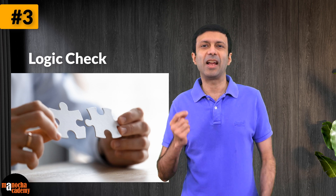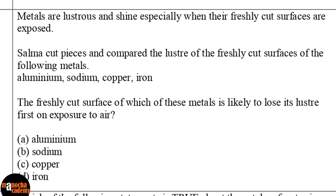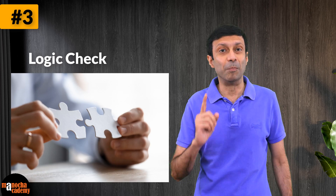Tip number 3: Logic check. Once you have figured out the concept and answer, see if your reasoning is matching with the question. For example, here's a chemistry question from the CBSE practice paper — it talks about a metal losing lustre, i.e. shine, when exposed to air. The concept here is based on the reactivity series of metals, but that is not mentioned anywhere in the question. So if you think you are going to use the reactivity series of metals, check if your logical reasoning will actually get you the answer. It's important to do a logic check to make sure you are applying the right concept.